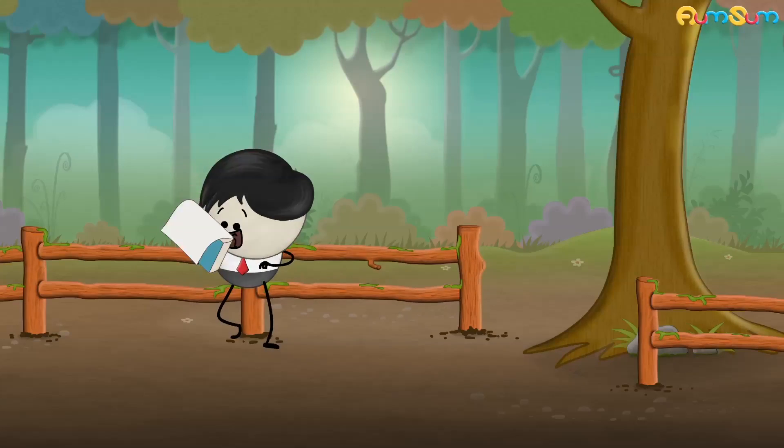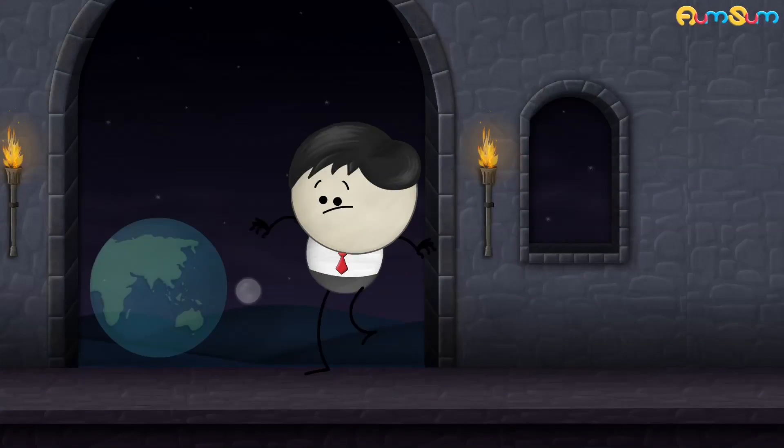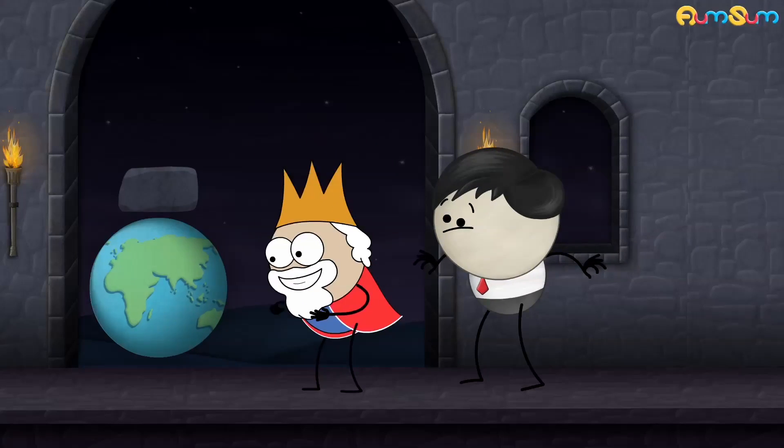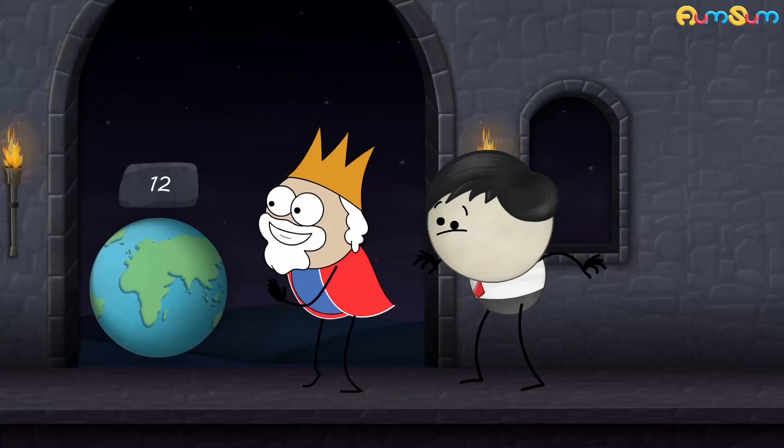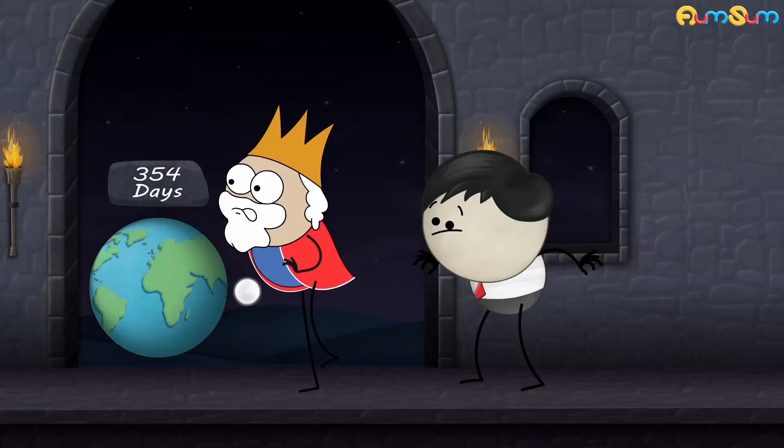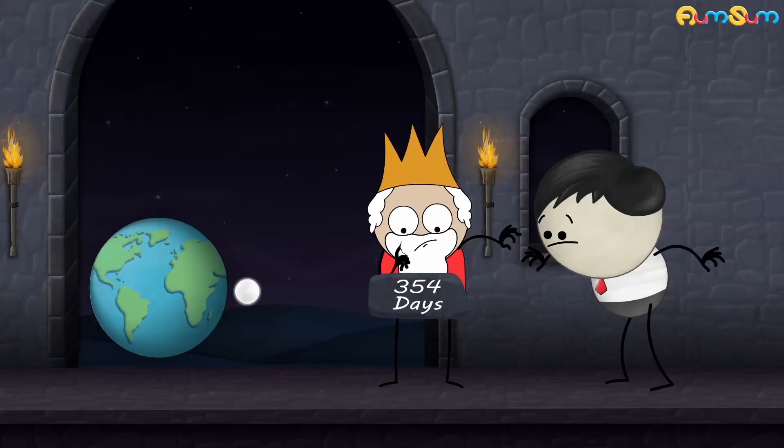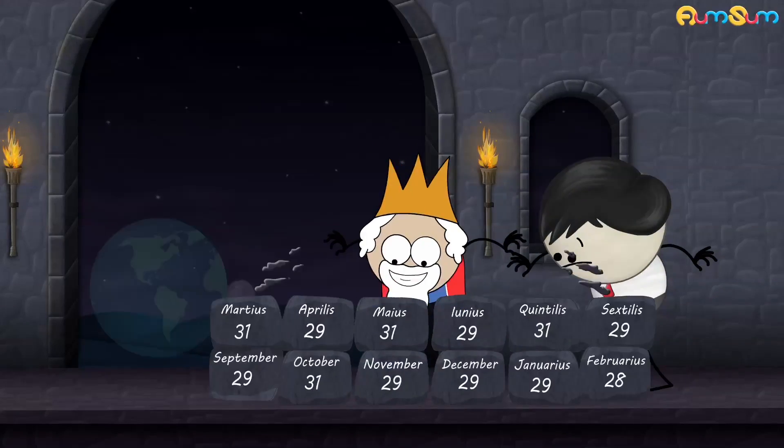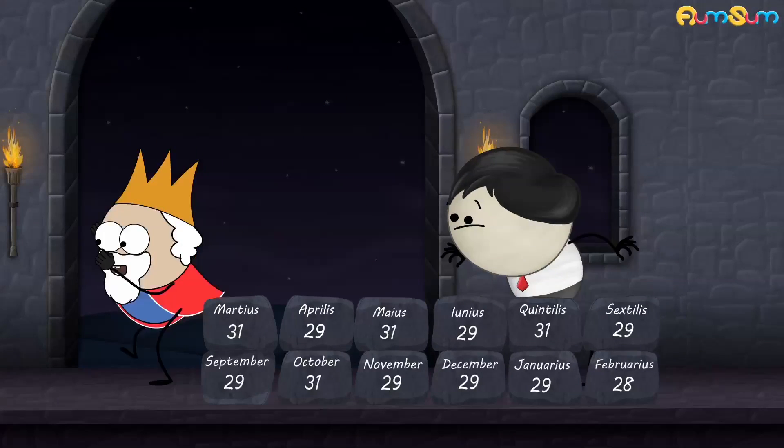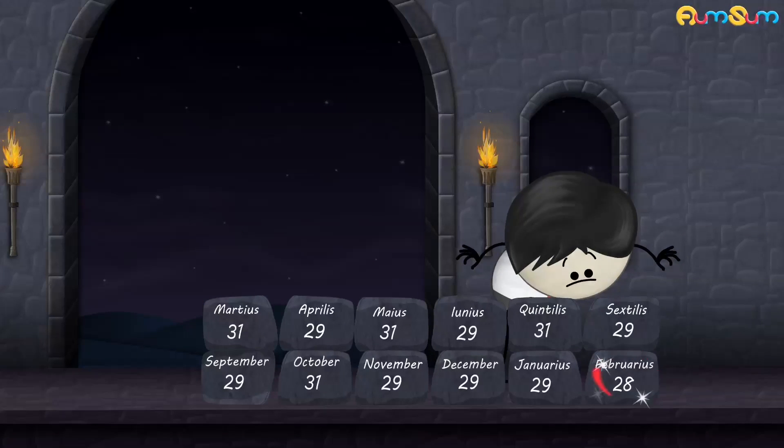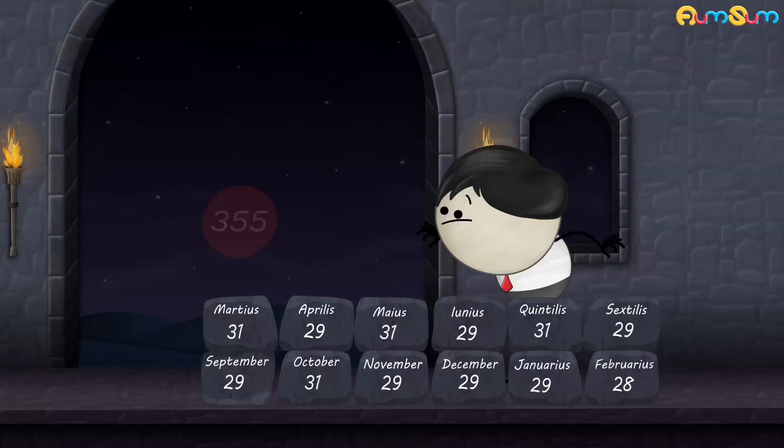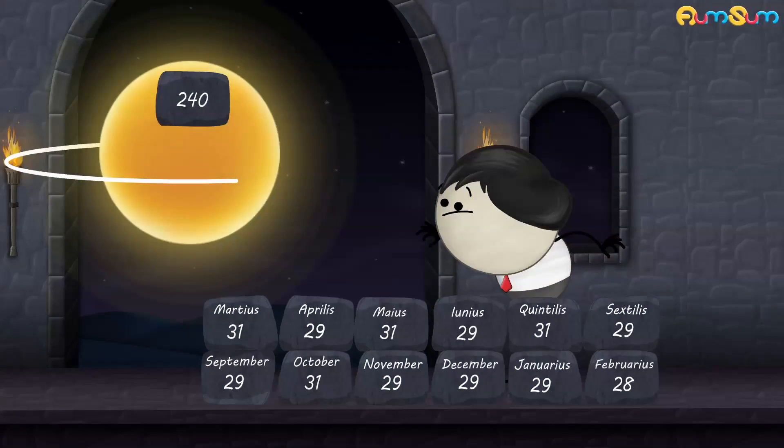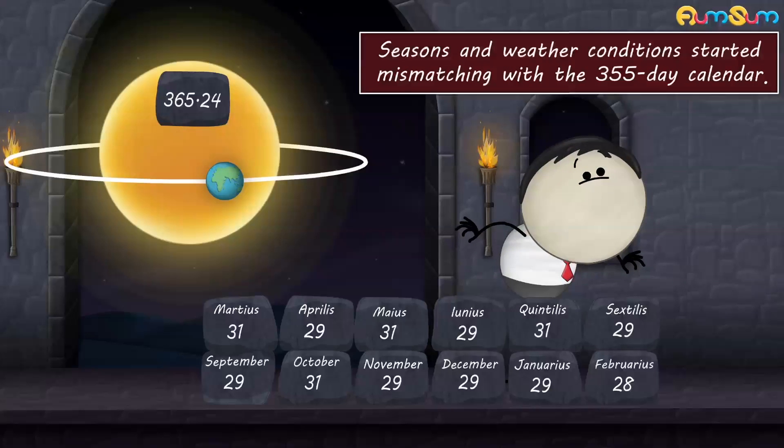Why does February have 28 days? Many centuries back, a Roman king called Numa made a calendar according to 12 lunar cycles, which approximately take 354 days. But as even numbers were considered unlucky, Numa rounded off days to 355. He also made each month odd numbered, leaving one month, that is, February, with 28 days to reach the total of 355. But as the earth takes 365.24 days to travel around the sun, seasons and weather conditions started mismatching with the 355 day calendar.